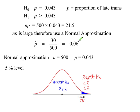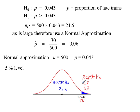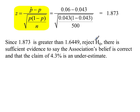p-hat, 30 out of 500, 0.06. We're calculating the test statistic, 1.873. And 1.873 is greater than 1.6449. Our test statistic is in the critical region. So we're going to reject H0 and state that there is sufficient evidence to say the association's belief is correct, and that the claim of 4.3% is an underestimate.